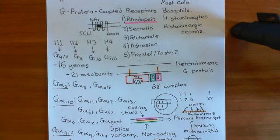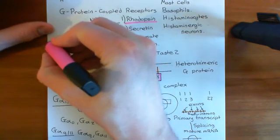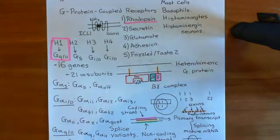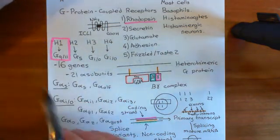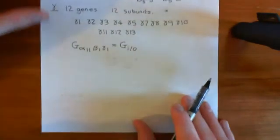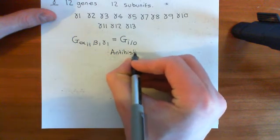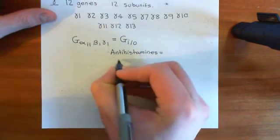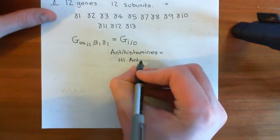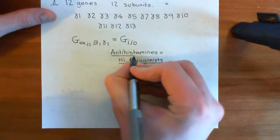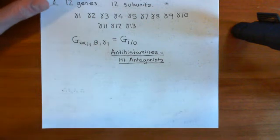Now I want to talk about some drugs which interact with each of these receptors. We'll start off with H1. The entire family of drugs called antihistamines work on the H1 receptor — they're not perfectly selective for H1, but they do have a preference for H1. Antihistamines is the colloquial word for H1 antagonists. These are drugs which will bind to the H1 receptor where histamine would like to bind, and they will not activate the receptor but will stop histamine from being able to bind to the receptor itself.